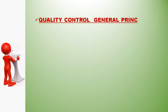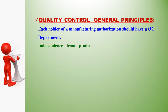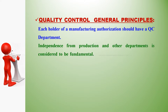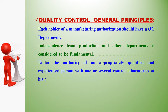Quality control general principles: each holder of a manufacturing authorization should have a QC department. Independence from production and other departments is considered to be fundamental, under the authority of an appropriately qualified and experienced person, with one or several control laboratories at their disposal. If a facility is not available, it can be managed by an appointed external laboratory or institution.